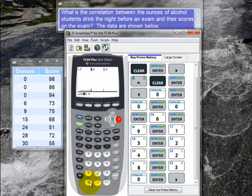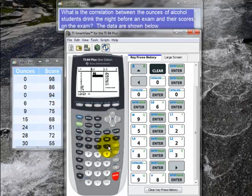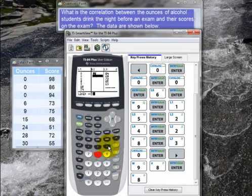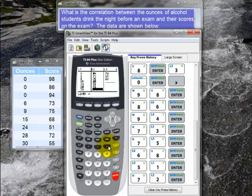Then for L2, that's the score on the exam. That starts with 98. So 98 and then enter and 86, enter, etc. Then finally the last number is 55.